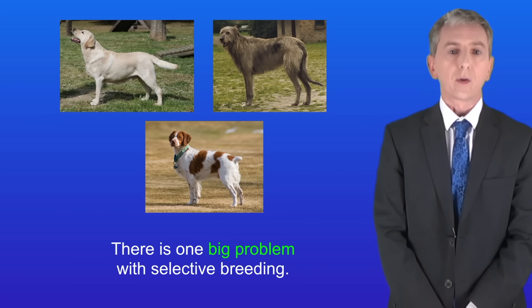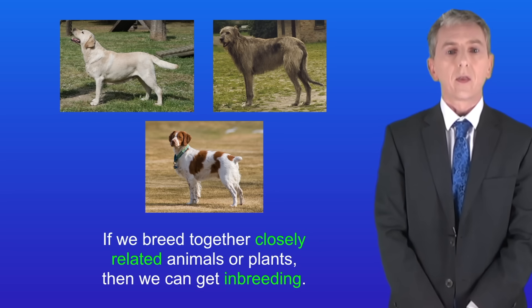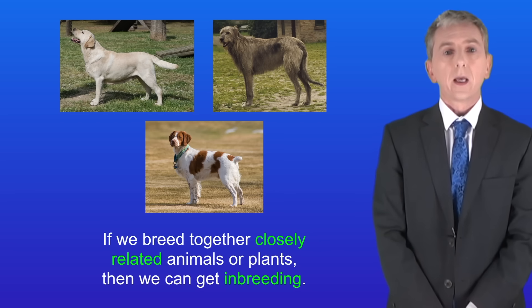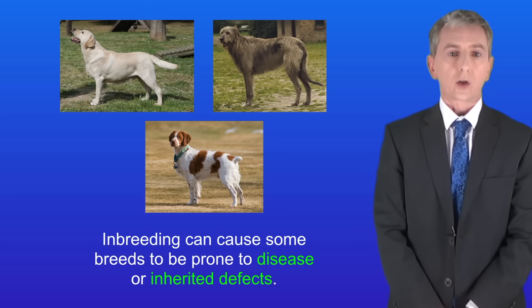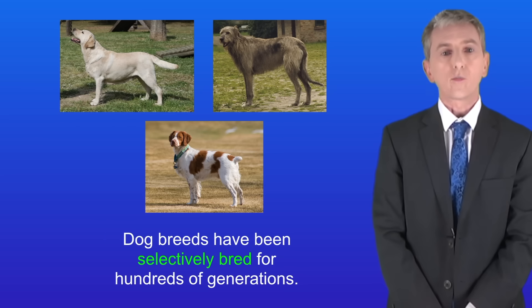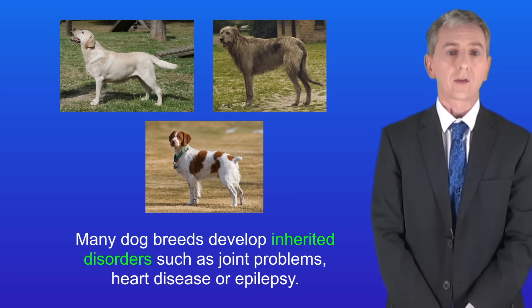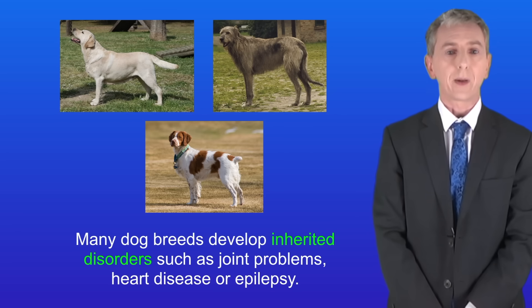Now there's one big problem with selective breeding. If we breed together closely related animals or plants then we can get inbreeding. Inbreeding can cause some breeds to be prone to disease or inherited defects. Dog breeds have been selectively bred for hundreds of generations, and many dog breeds develop inherited disorders such as joint problems, heart disease, or epilepsy.